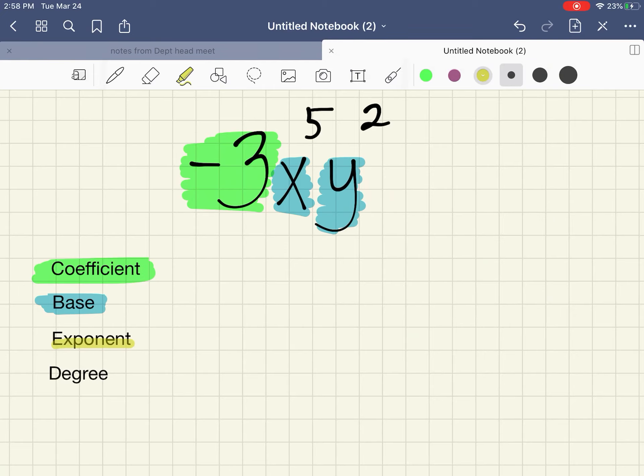The exponents are 5 and 2. And also, not shown would be the exponent for the negative 3, which would be to the first power. It's not shown. So if something doesn't have an exponent, it is to the first power.